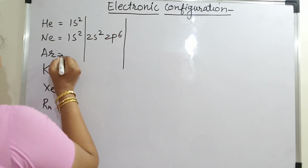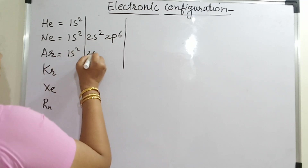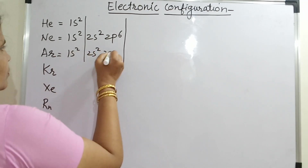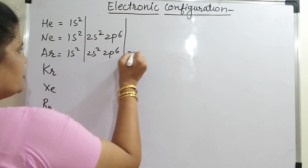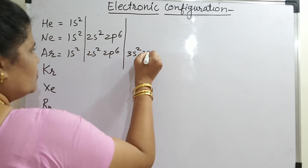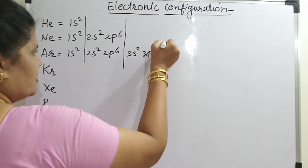For argon: 1s2, 2s2, 2p6, 3s2, 3p6. You have to keep on completely filling the orbitals.